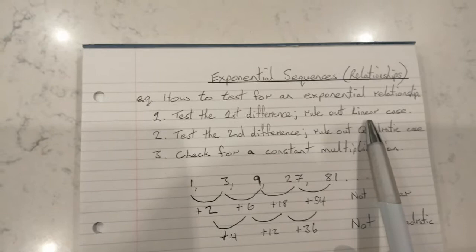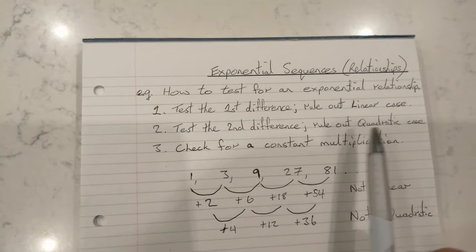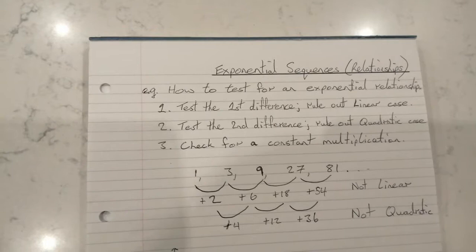The first thing we would do is test the first difference and rule out that it's not a linear relationship or a linear sequence. We test the first difference to see if it's a constant difference. If it's not constant, then it's not linear. We then test the second difference to rule out the quadratic case.